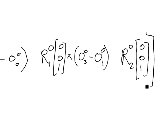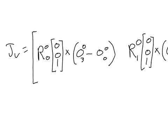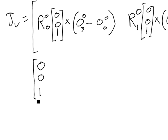Now I just have to expand each of these terms to figure out what each one is. Let's start with column 1. The rotation of frame 0 relative to frame 0 is the identity matrix, so multiplying by the k vector (0, 0, 1) gives me the vector (0, 0, 1). Now I have to cross that with the two origins subtracted from each other.